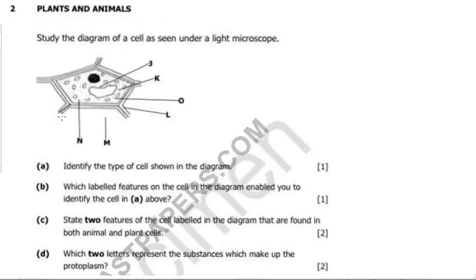This next question is from the 2020 Specimen Paper 2, Integrated Science Paper 2, question number two. It's on the topic of plants and animals. It says: study the diagram of a cell as seen under a light microscope. We've got parts labelled J, K, L, M, N, and O. The first question says: identify the type of cell shown in the diagram.